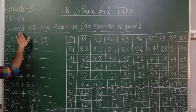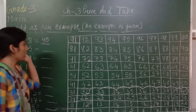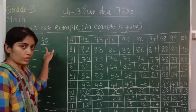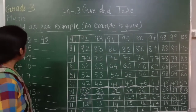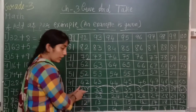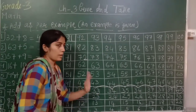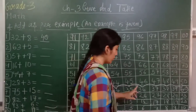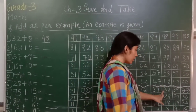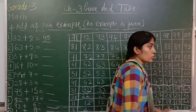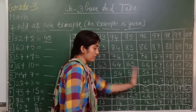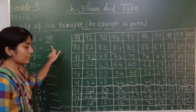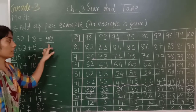Add means plus karna. See the first number: 32 plus 8 is equals to 40. The first example given hai — 32. Hum 32 pe khaade hai, aur humko 8 steps chalna hai. One, two, three, four, five, six, seven, eight. So 8 steps hum next chal na hai, toh answer dinga hai 40. That means 32 plus 8 is equals to 40.